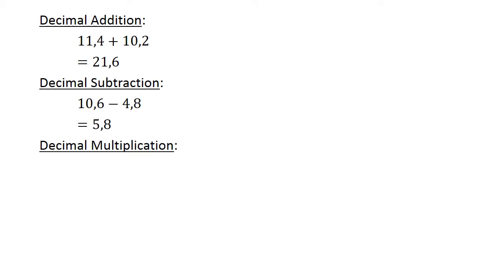Decimal multiplication. 0.7 times 0.04. 7 times 4 equals 28, so the answer is 0.0028.